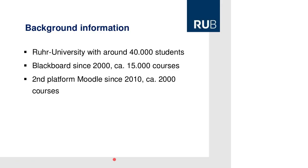For background information: I come from a German university called Ruhr University, which has more than 40,000 students. At our university, which is unique in Germany, we have had Blackboard as a platform since 2000 and we have around 15,000 courses on Blackboard, which are not all live courses, but still a fair amount. And since 2010, we also run Moodle as a second platform, and Moodle right now has around 2,000 courses.